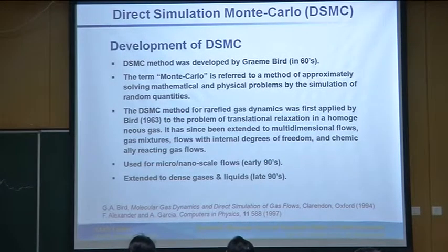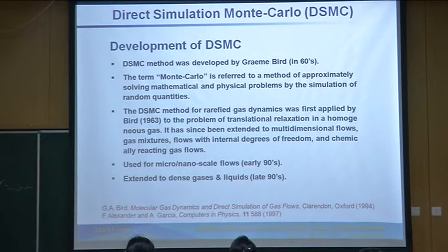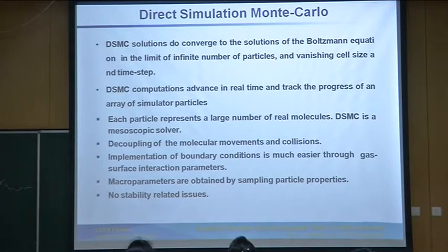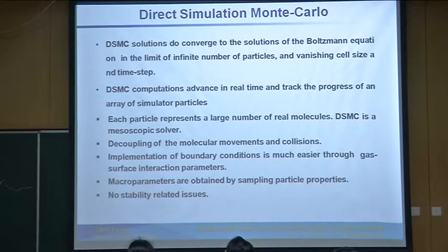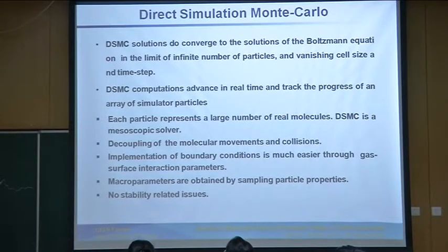DSMC has also been used for micro and nano scale flows, but with limited success — there are still some issues related to the implementation of boundary conditions. It has also been extended to dense gases and even weakly ionized gases. DSMC solutions have been proven to converge to the solution of the Boltzmann equation, provided the discretization error is made very small — for example, a time step of 0.01 of the mean collision time and a cell size of 1/32 of the mean free path.